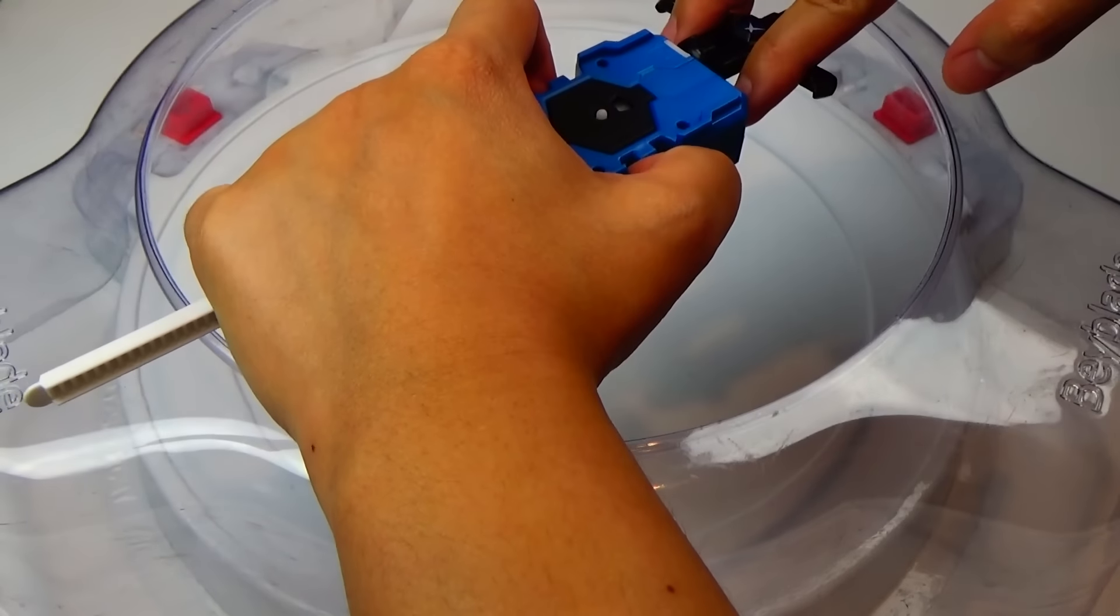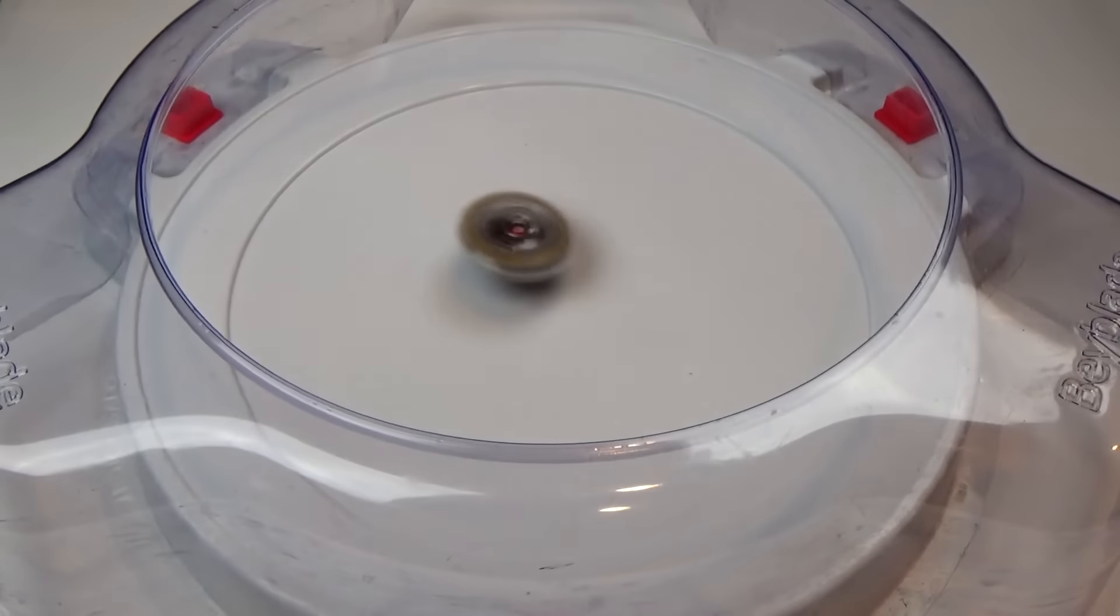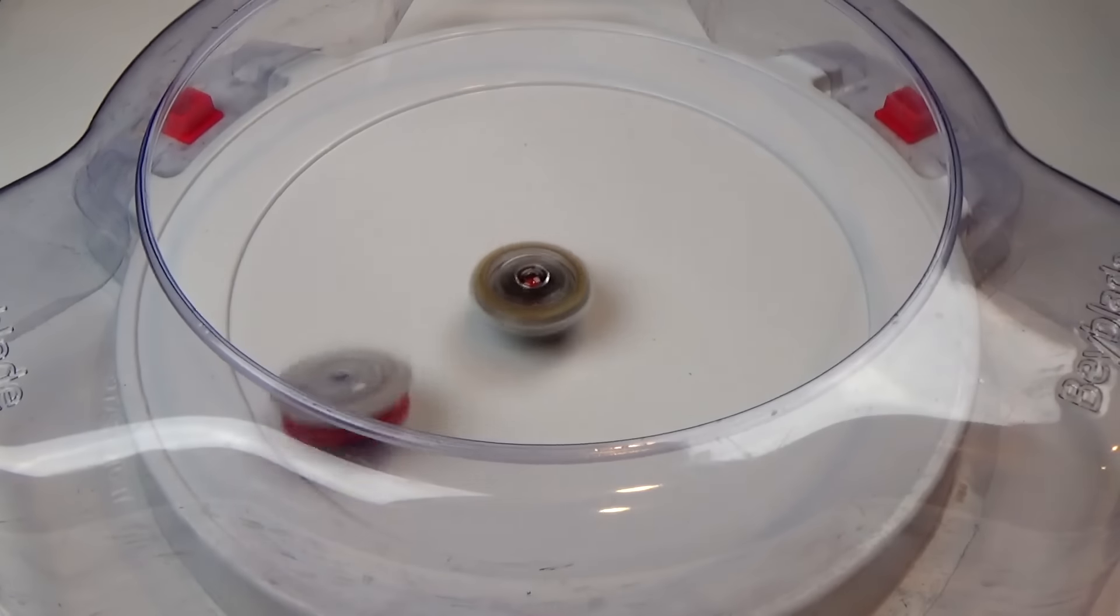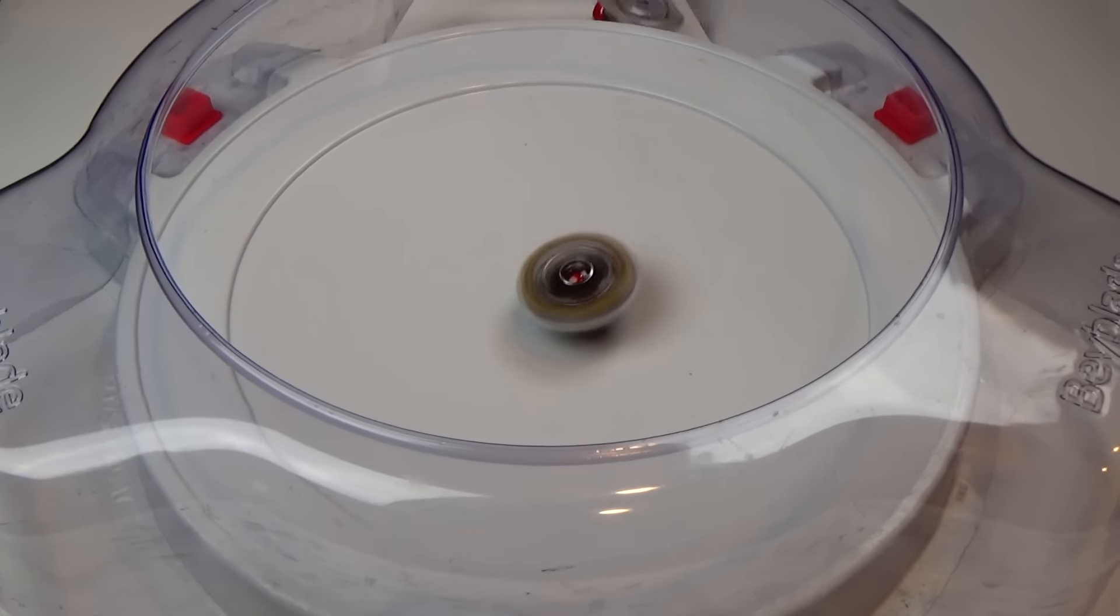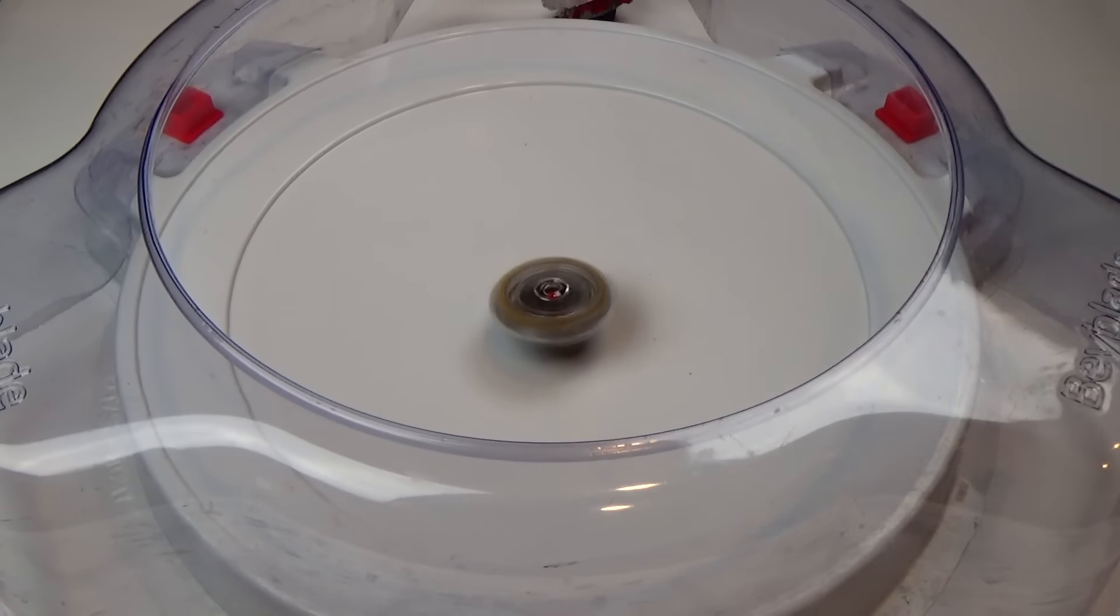Round 3. 3, 2, 1, go shoot! The self-K.O., 1 point to Unlock Unicorn for the over finish.